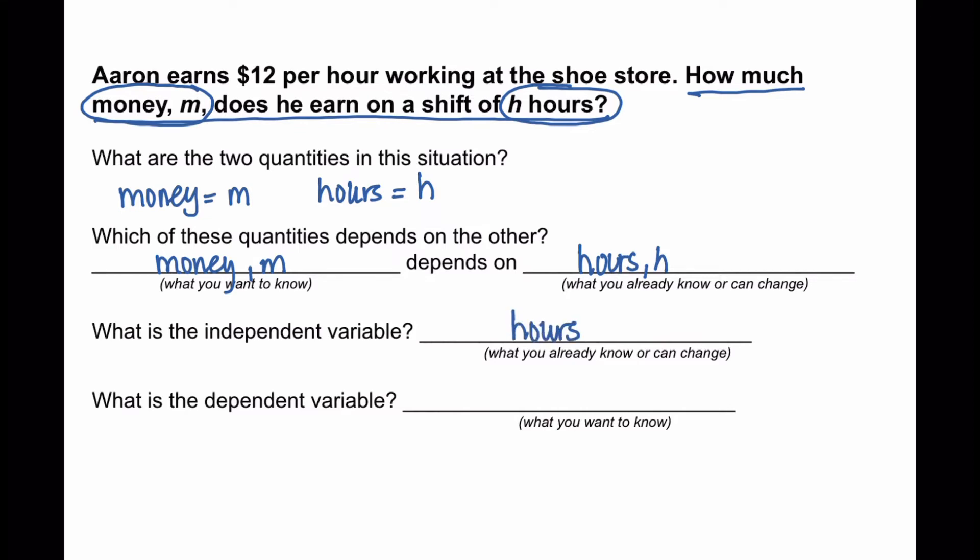The dependent variable is going to be the variable that answers the question what do you want to know? In this case, we want to know how much money Aaron is going to make.